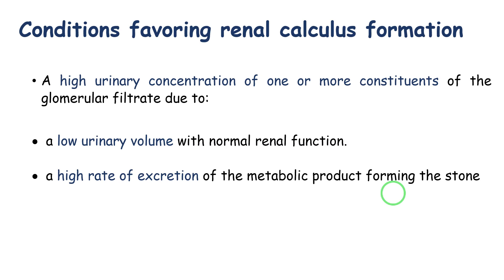Another cause of high urine concentration of stone-forming metabolites is a high rate of excretion of that product. For example, calcium. This occurs either due to a high plasma level of the constituent — for example, hypercalcemia — or due to impairment of normal tubular reabsorption from the glomerular filtrate, leading to supersaturation and favoring precipitation and stone formation.